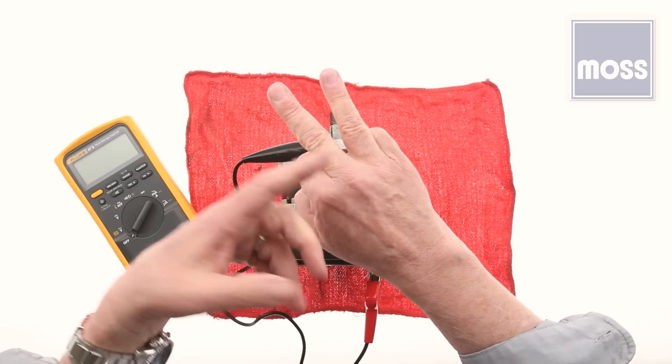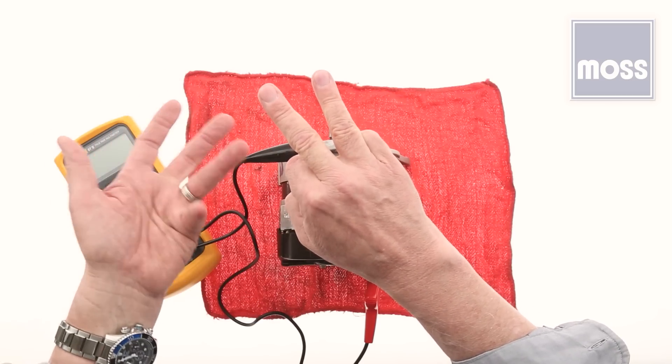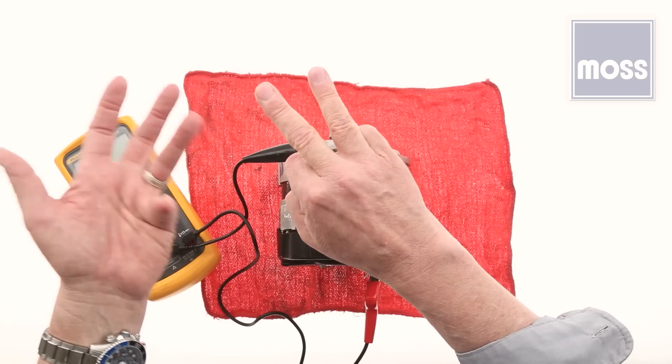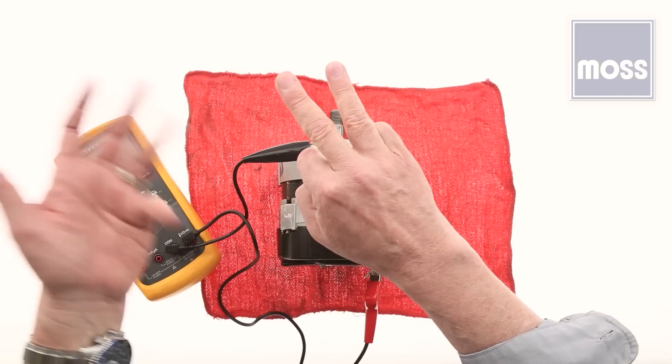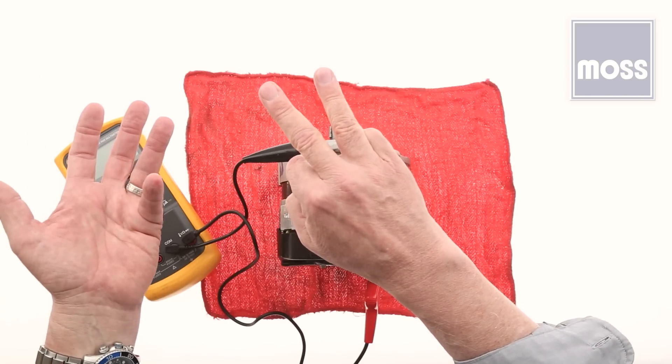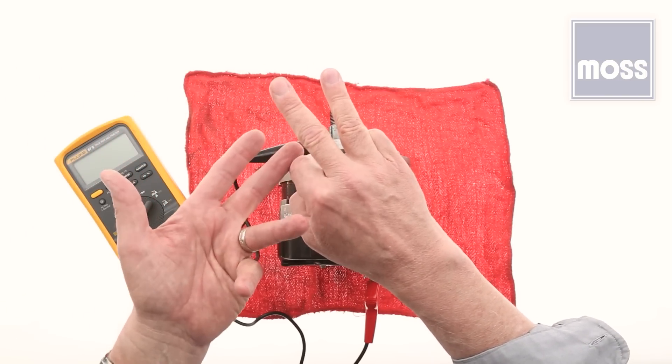In these classic British cars, the electric load on the system is pretty low, so unless you drive with your lights on, the car whose alternator has a bad diode might run just fine, except for a possible battery charging issue. So how do we test for a failed diode?